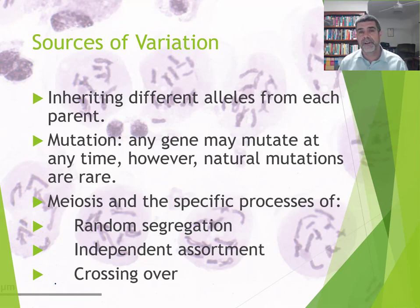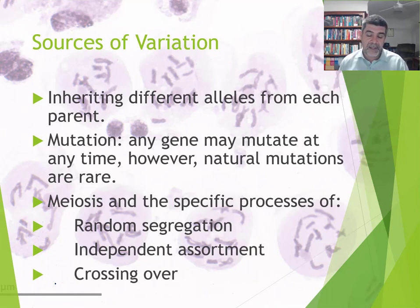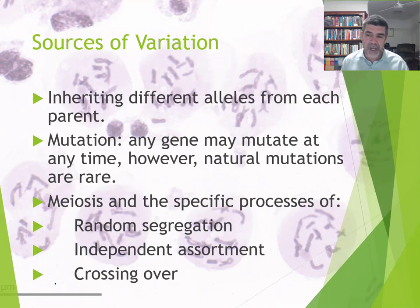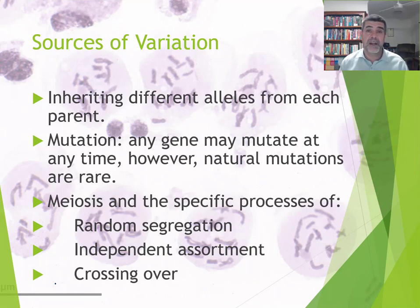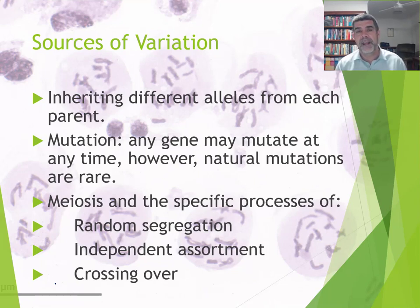In order for natural selection to operate, we need firstly to have variation within populations. That's so that the selecting agents — whatever they may be, whether they're environmental changes, changes in the preference of particular prospective mates, or changes in prey or predators — each of these selecting agents needs to operate on variation within populations.